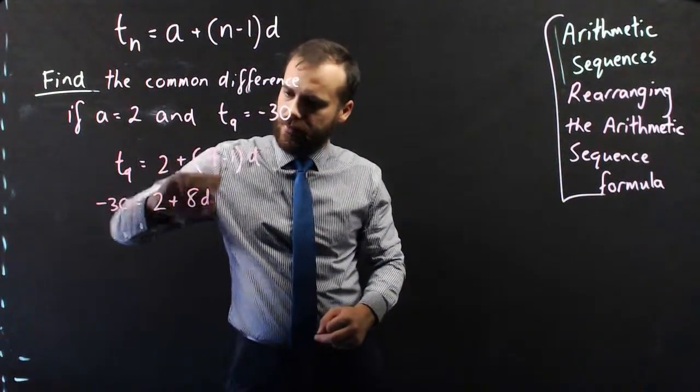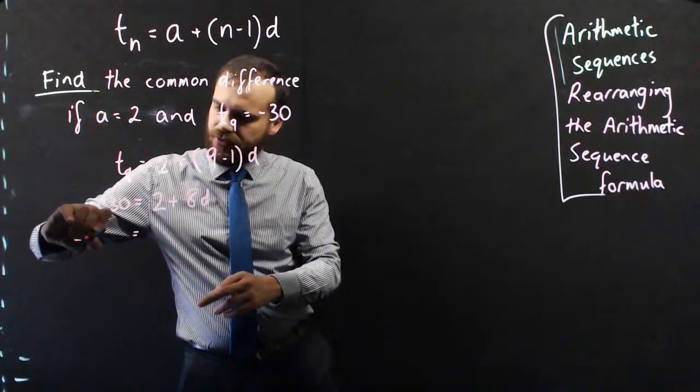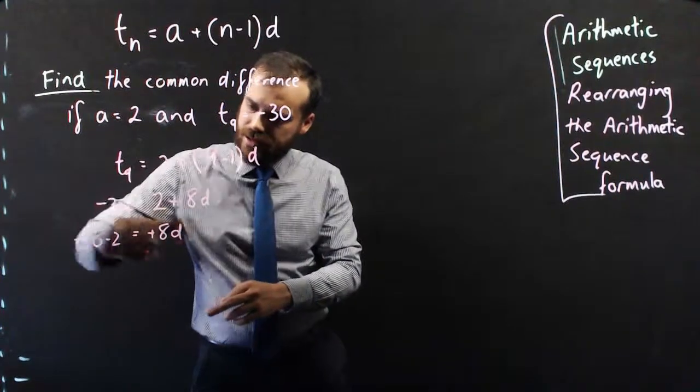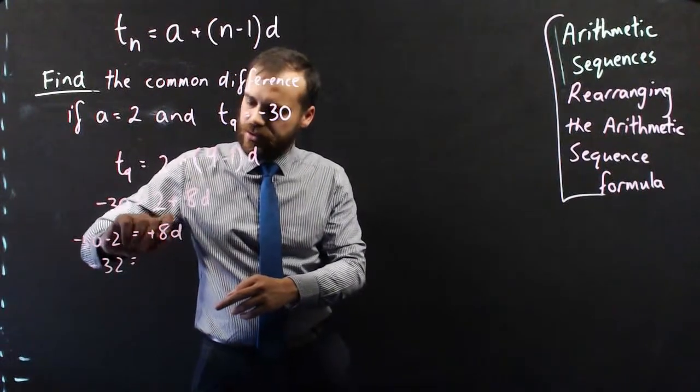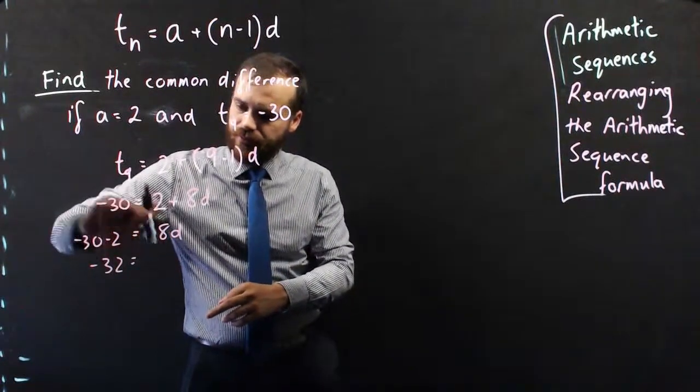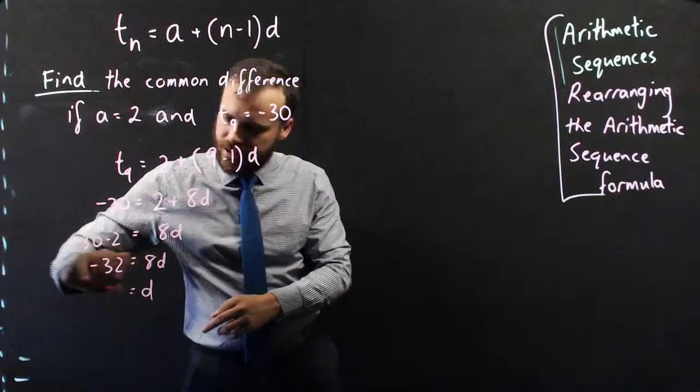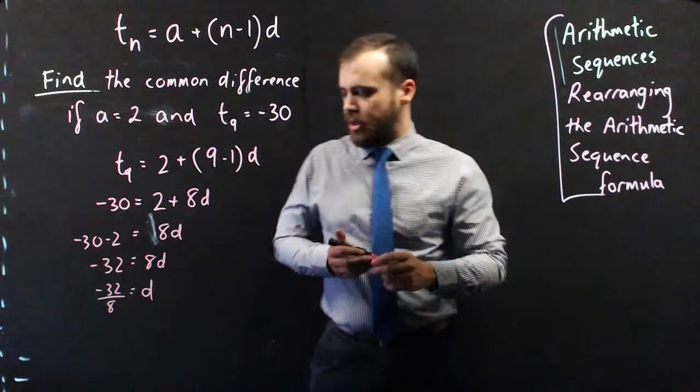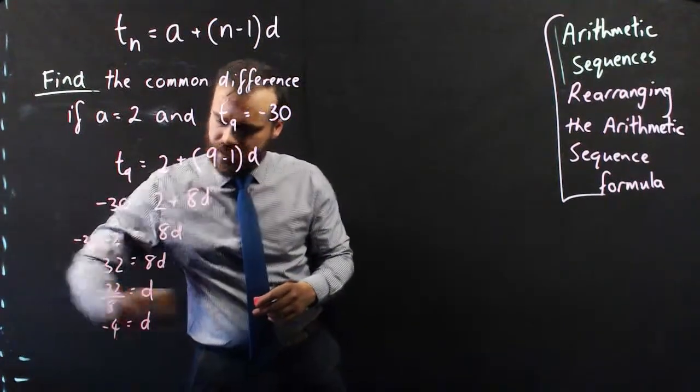Rearranging that, I get negative 30 minus 2 equals 8D, so that's negative 32 equals 8D, which means D equals negative 32 over 8. That works out to D equals negative 4.